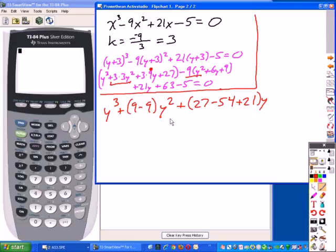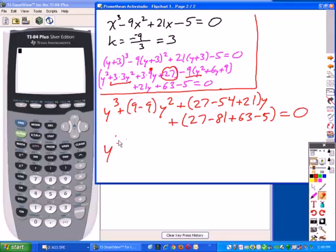And then our constant term, we have 27. And we have -9 times 9, which is 81. And then we have plus 63 minus 5. That all equals 0. And so the final equation comes out to be, excuse me, that would not be y² because we're eliminating the y² term. This is y³ + 0y² plus, 27 and 21 is 48 minus 54 is -6 times y. And here we have 27 and 63 is 90 minus 81 leaves positive 9 minus 5 is plus 4 equals 0.